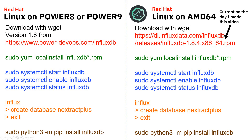Then you use systemctl start InfluxDB, enable it so that it comes up when you reboot, and then check the status. Then you need to create a database within the database — that's just an area inside the database to separate different sorts of data. You'd have a different database for NJmon, for example. So you type in 'influx' — that's the CLI — then 'create database' and the name, then exit. Then if you haven't got the InfluxDB client installed, you run sudo python3 -m pip install influxdb to load the Python 3 client so we can talk to InfluxDB.